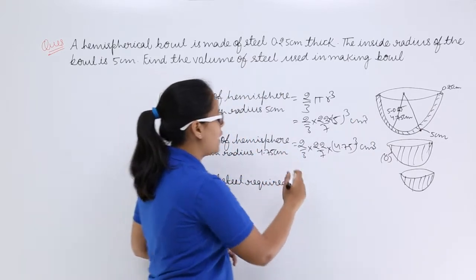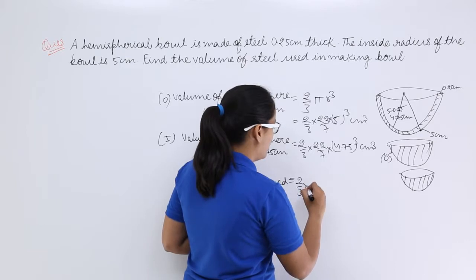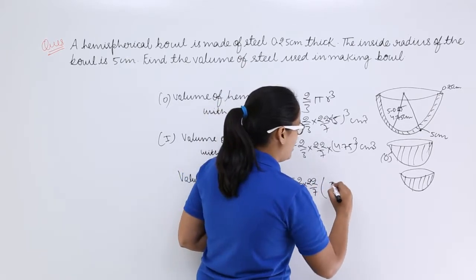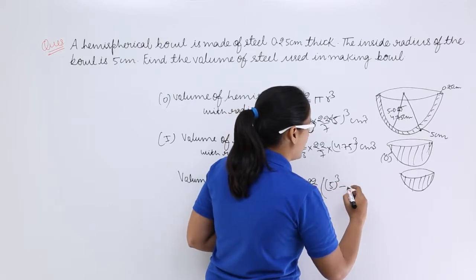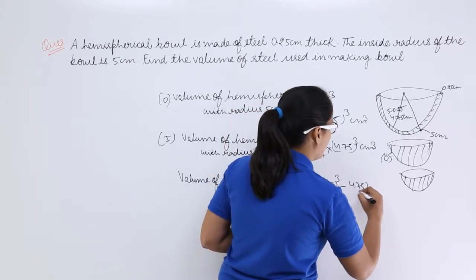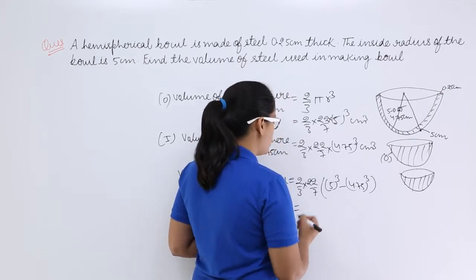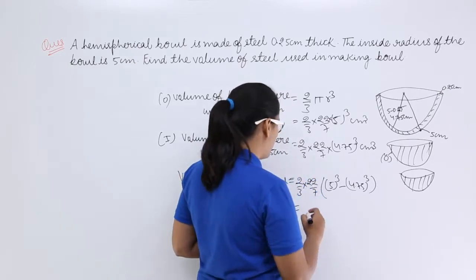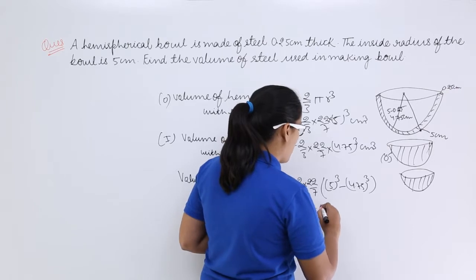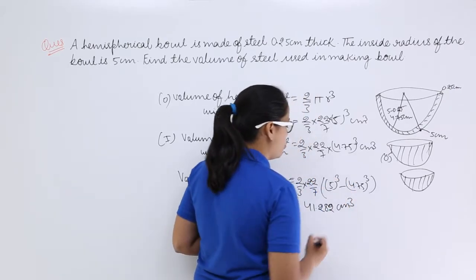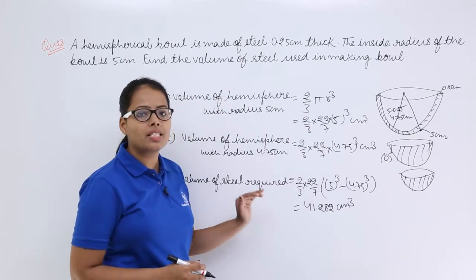So the volume of steel required will be 2/3 × 22/7 – we can take this common – and inside the bracket you will get 5³ minus 4.75³. When you solve this, you will get 41.282 centimeter cube as the volume of steel required.